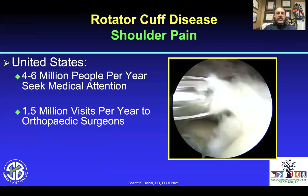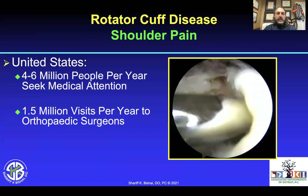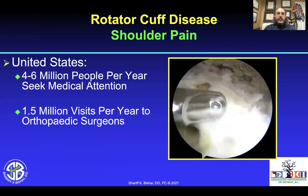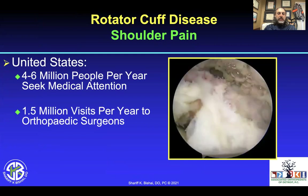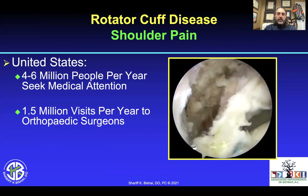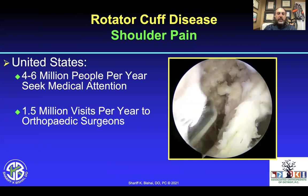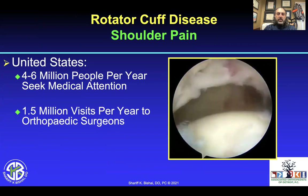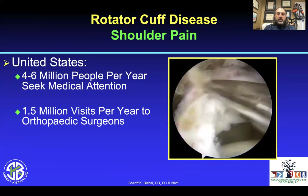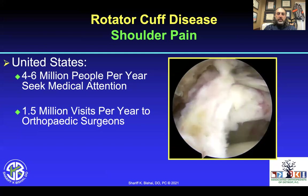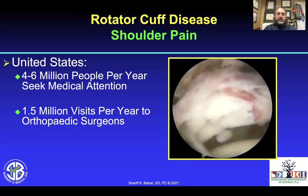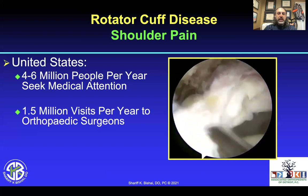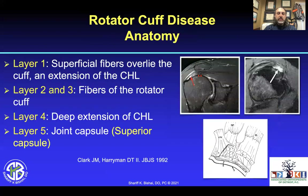When we talk about rotator cuff disease, we realize that this is a huge population of patients with roughly 4 to 6 million people per year that seek some sort of medical attention for this type of injury. 1.5 million will find their way to an orthopedic surgeon — not just to the sports or shoulder elbow surgeons, but also to the general orthopedist. So it's very important to realize the different options and understand the different ways we can treat these patients.